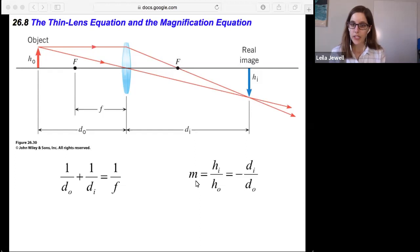Similarly, the magnification is the ratio of HI to HO, and that ratio is also equal to negative DI over DO. So that's handy to note. Now, someone asked a question on this, and I'm really glad they brought it up, because I sometimes forget to mention it.